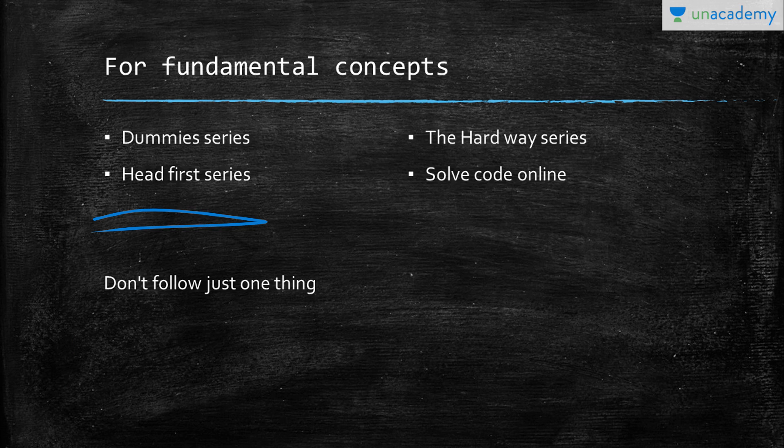But if you really want to become a god of Python, C++, or Ruby, I recommend going through The Hard Way. That's the book's name—Learn Python the Hard Way. The 3.6 version is available on its website now. You can download or buy the book from there. It's really awesome. One more thing you can do is solve code online.